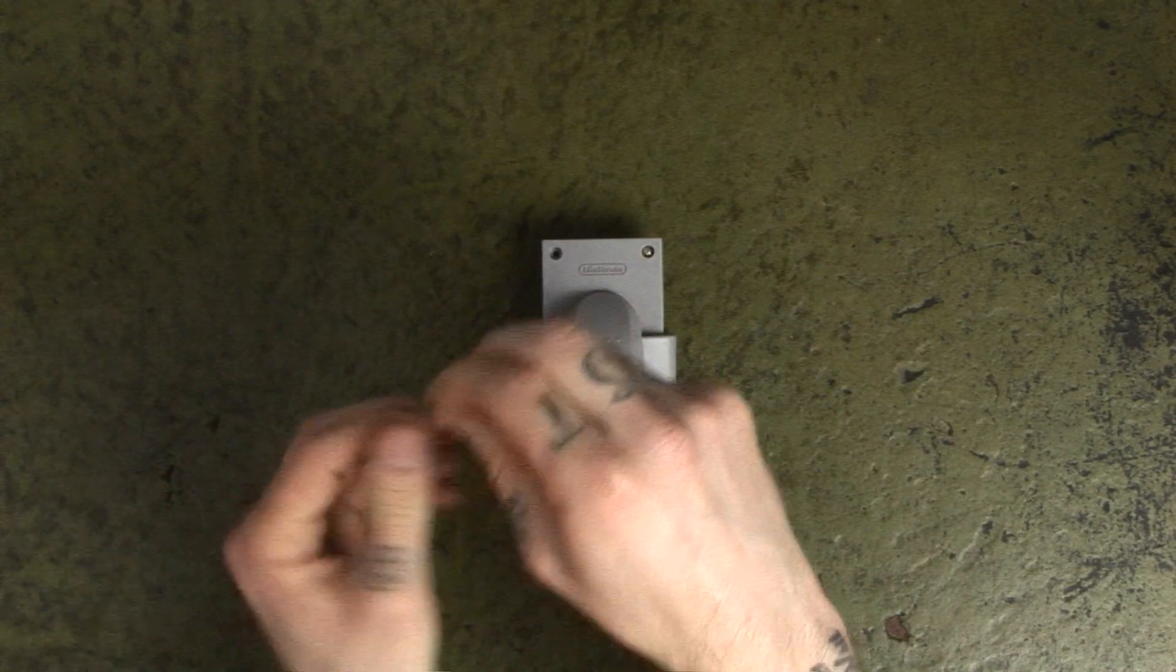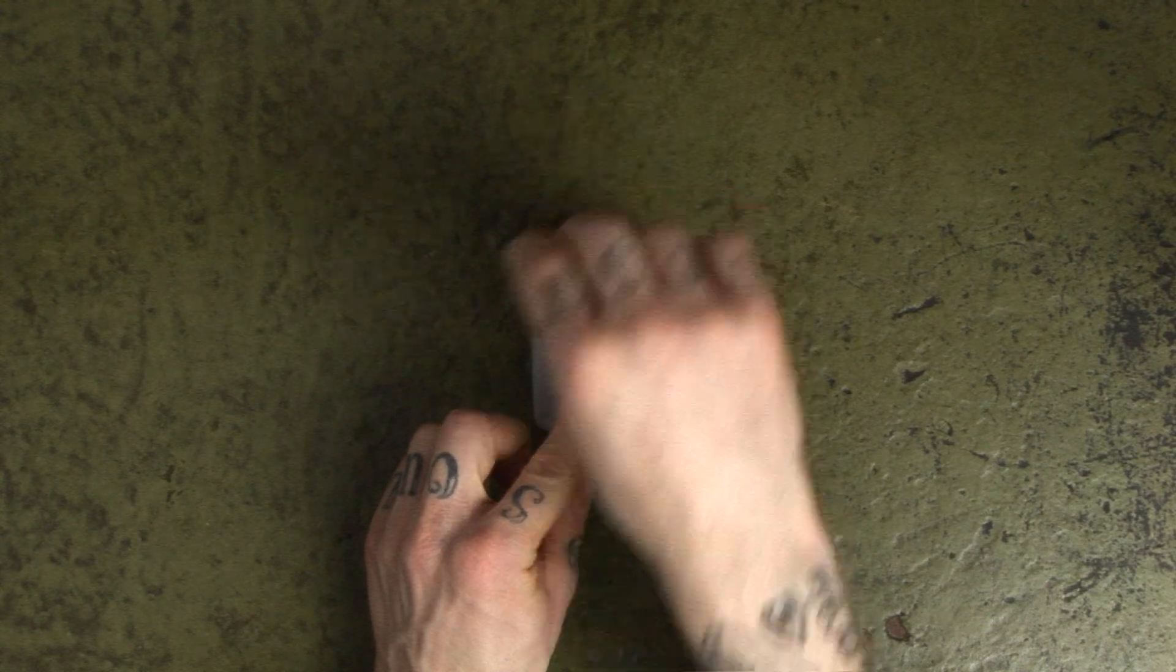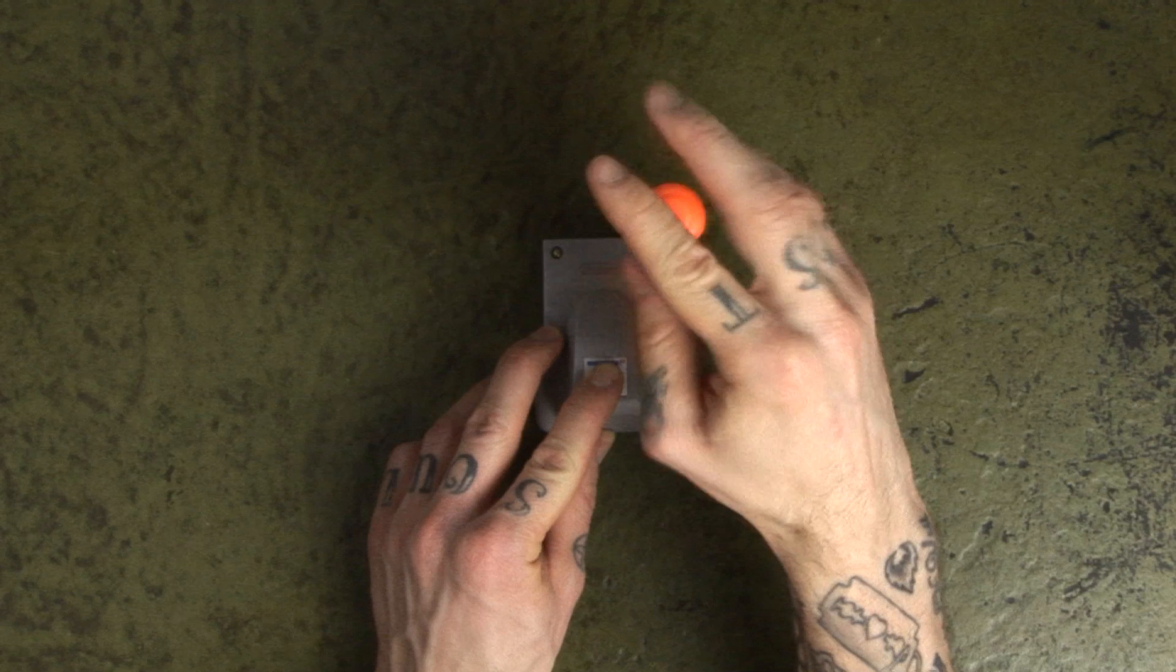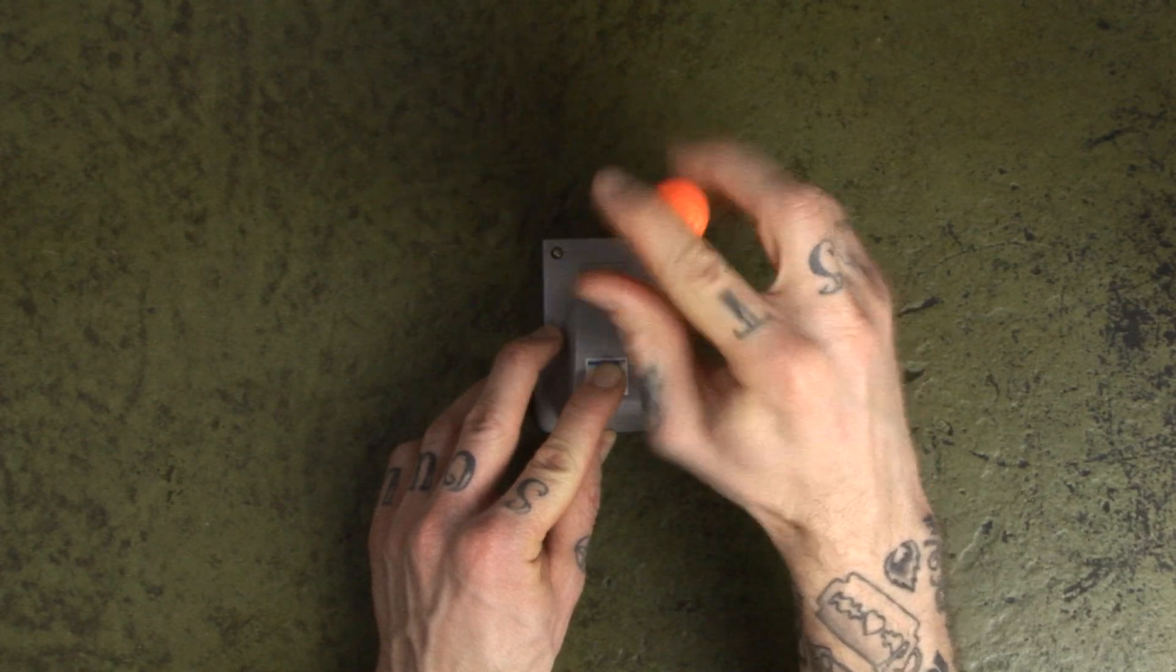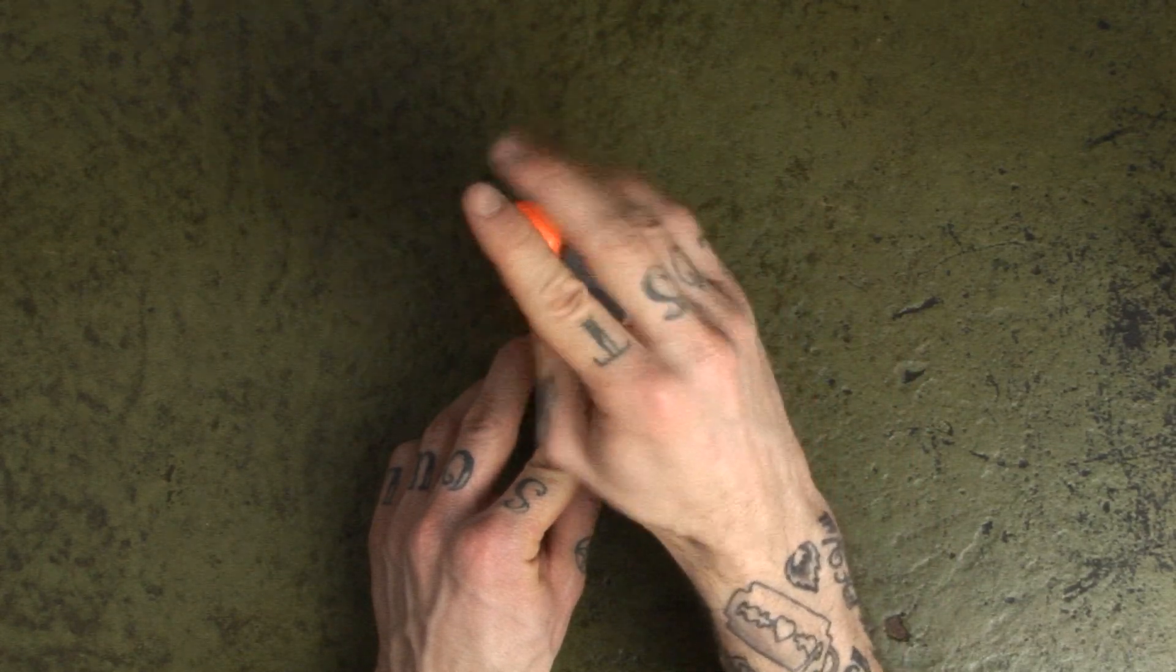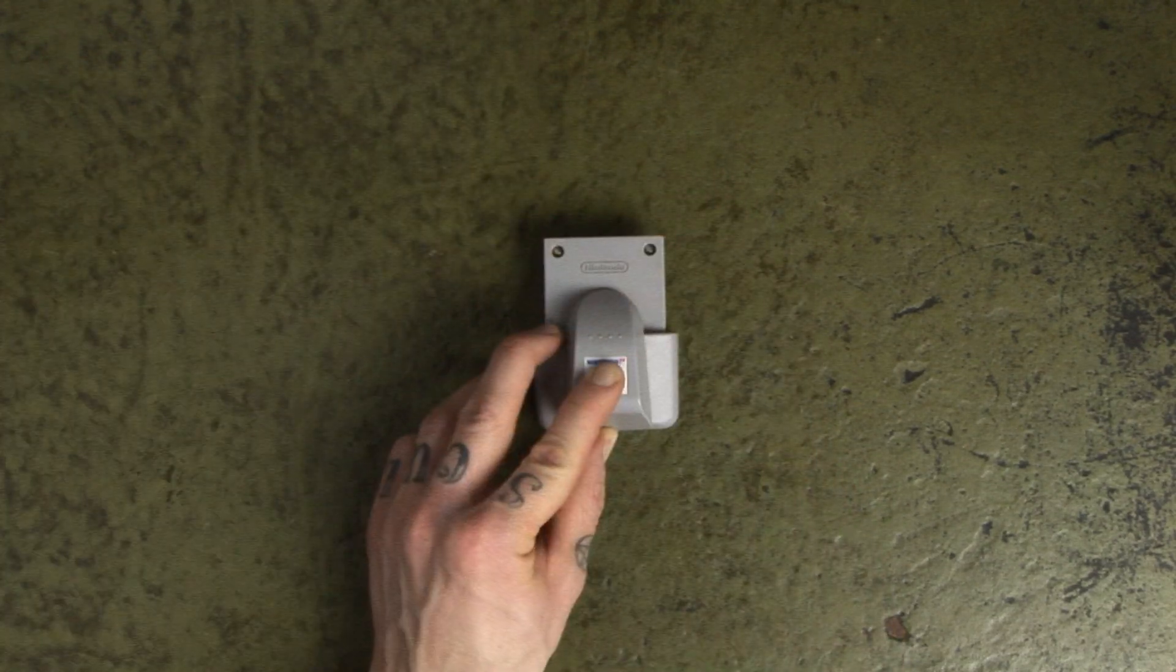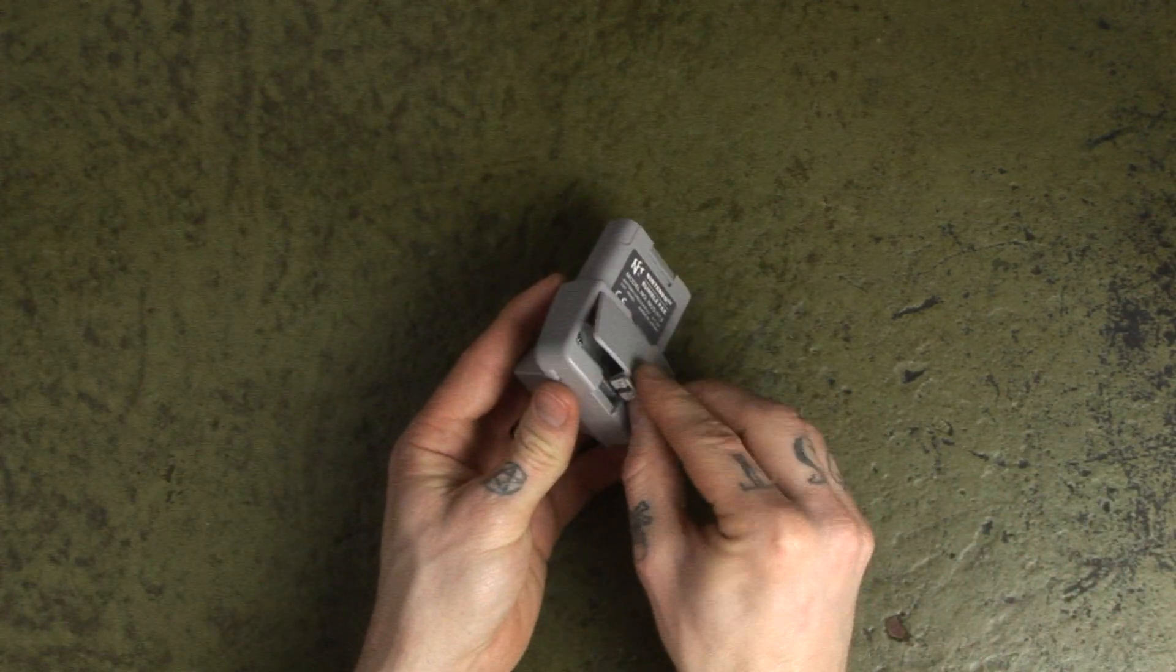Put the two game bit screws into their holes and screw them tight. Put the battery cover on and you are now done.